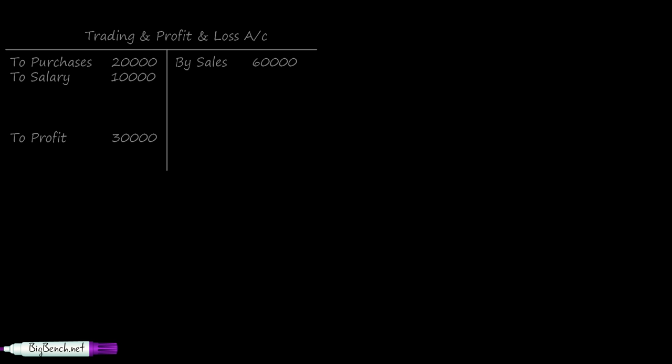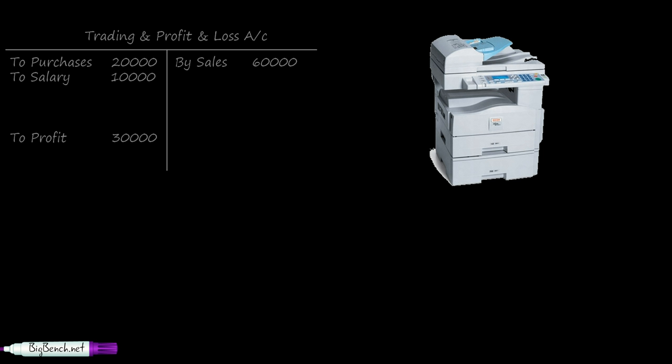Let us consider that this business is owned by a stationery shop owner. Apart from this, he has a photocopy machine which he buys for 22,000 rupees. This is a fixed asset for him because he will be using this photocopy machine in his business to generate sales. The price at which the asset is bought by the owner of the business is called the cost of asset.